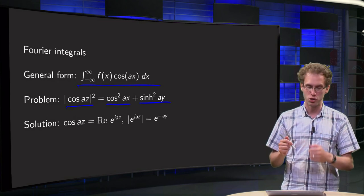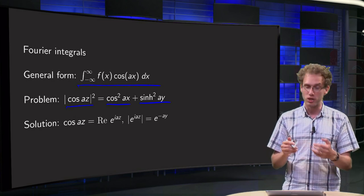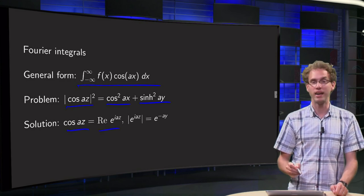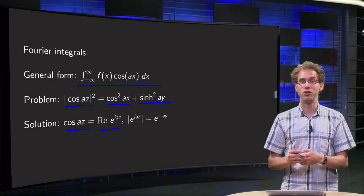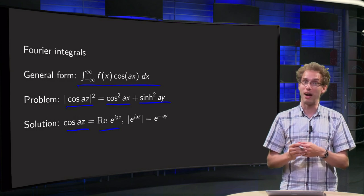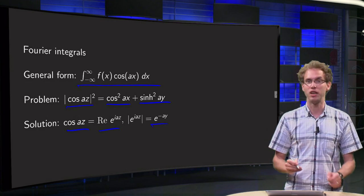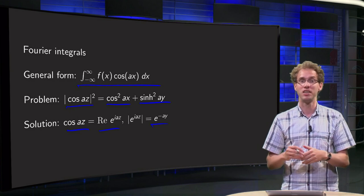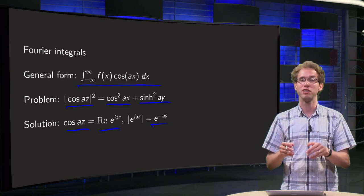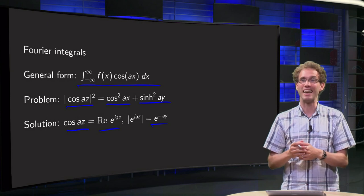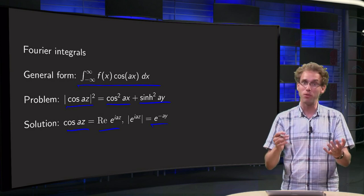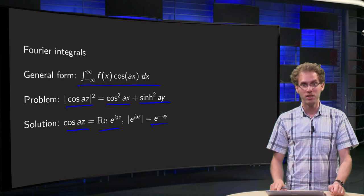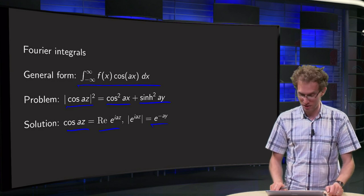The solution is a trick: the cosine of az is the real part of e^(iaz), and the norm of e^(iaz) equals e^(−ay), which decays in the upper half plane. So you cannot use cosines directly, but you can use e^(iaz) instead, because that one will decay for large values of z.